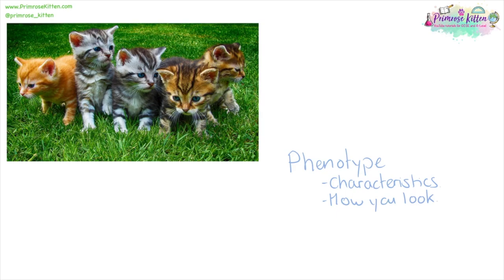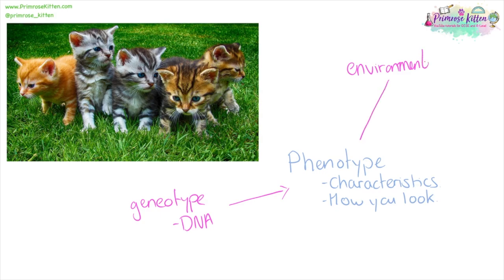If you know that someone has an identical twin, you'll know that they are not exactly the same, even though their genotypes are the same. While they have identical genes, their phenotypes — their characteristics and how they look — are going to be very different. Because your phenotype is influenced by lots of different things: firstly, your genotype, so that's your DNA and your genetic information, and secondly your environment. This leads to natural variation in a population.